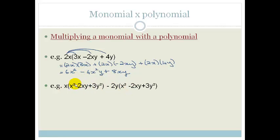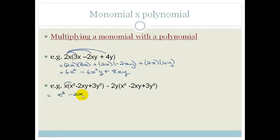Now this next example looks very scary but it's not — we just take it baby steps. This is revision of grade 9 work, so I'm not going to write it all out; we'll do it in our heads — you should be practicing that. So: x times x squared gives x cubed. x times minus 2xy becomes minus 2x squared y, because it's just the x's that are being increased.